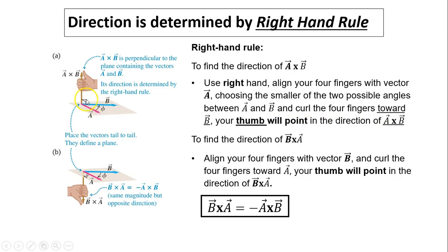Here's what that means: put your four fingers in line with a in the same direction as a, and curl toward b, because this is the smaller angle between a and b — the other angle outside is bigger. So your thumb should point in the direction of a cross b. That's the direction of the vector product.